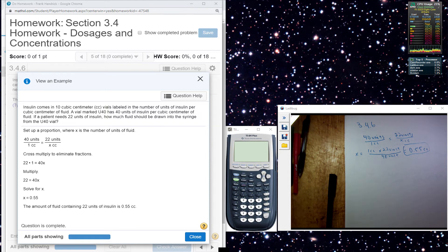Okay, so we're given 40 units of insulin per 1 cc of fluid, and we know the person is going to need 22 units of insulin. How many cc's do they need? So we set up our proportion here and cross multiply, divide, and we find that they need 0.55 cc's of fluid.